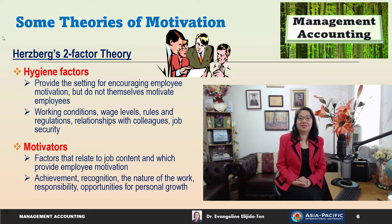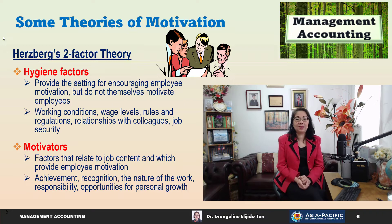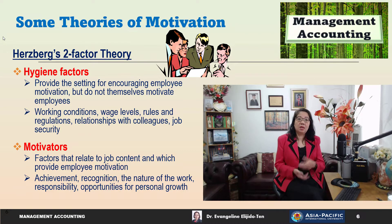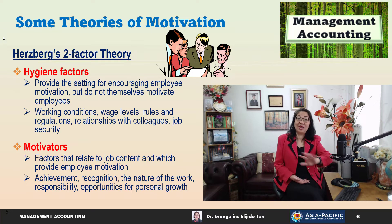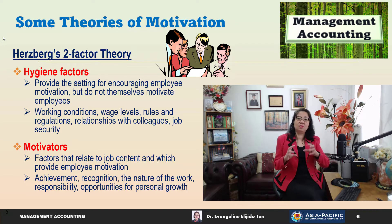The second factor is the motivator — these are factors relating to job content that provide employee motivation according to Herzberg. Examples of motivators include achievement, recognition, the nature of work, responsibility, and opportunities for personal growth. Giving autonomy or responsibility to managers forms part of these motivators, leading to job satisfaction. Cash bonuses for a job well done also help. Both factors must be present for employees to be motivated.